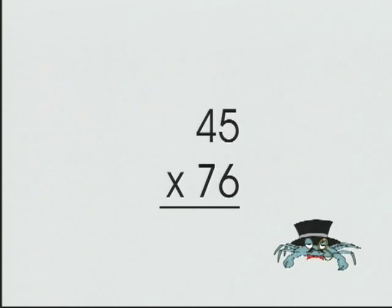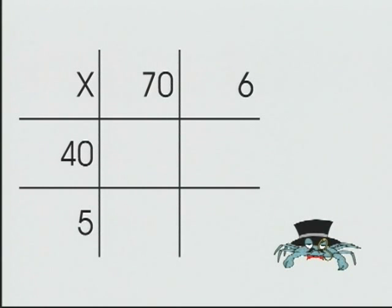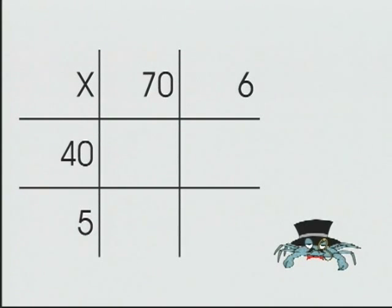Backdoor multiplication uses partial products and expanded notation. To solve 45 times 76 using backdoor multiplication, we make a grid expanding 76 into 70 plus 6, and 45 into 40 plus 5.